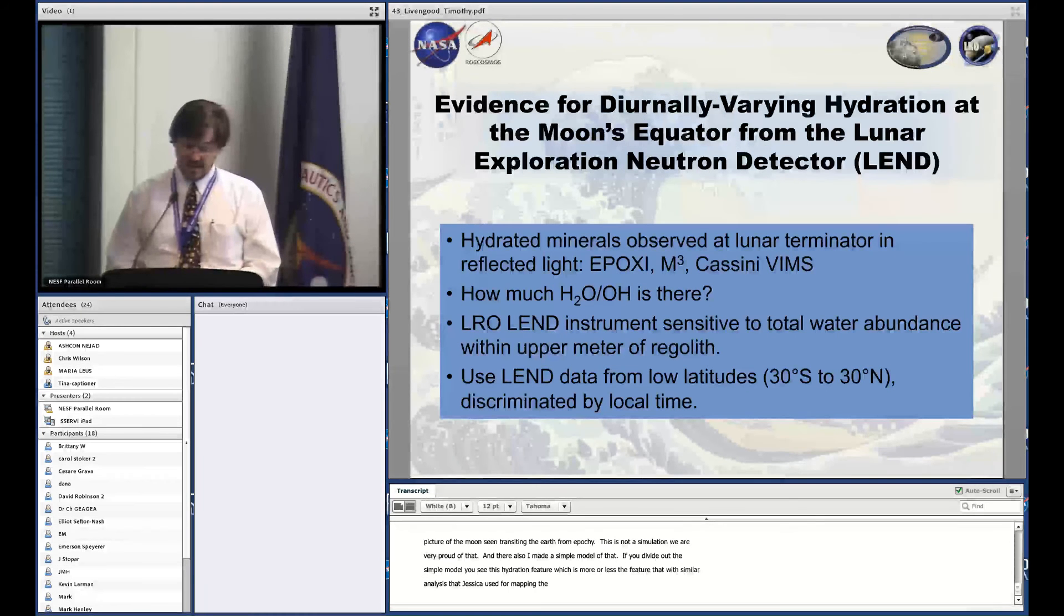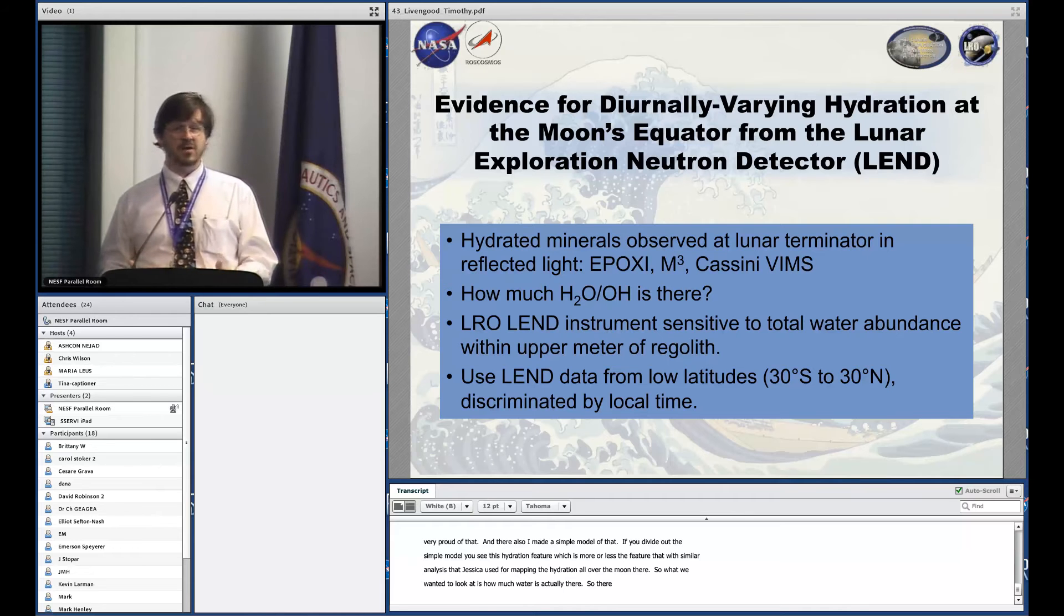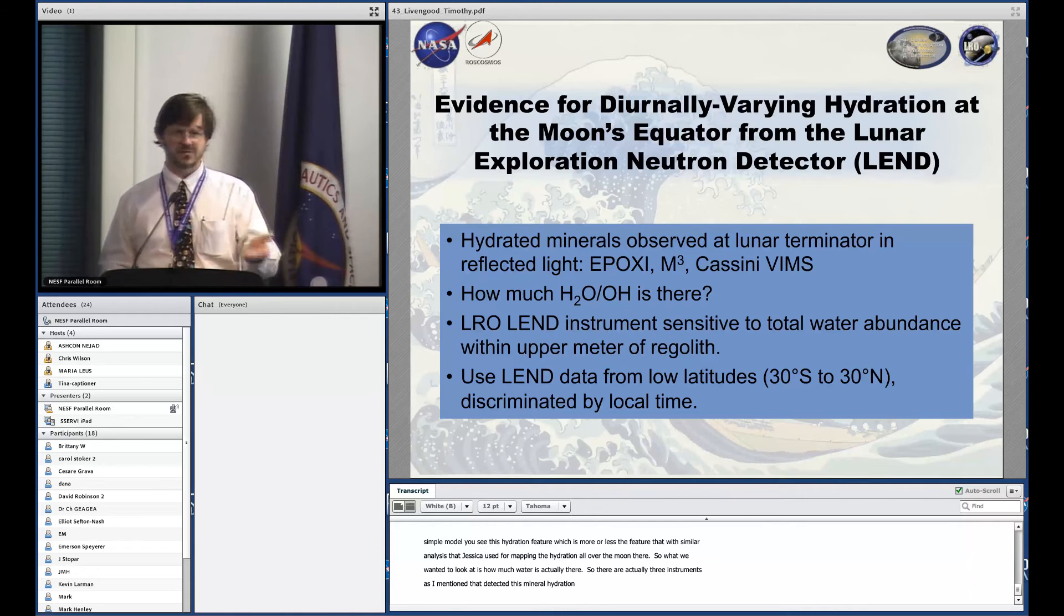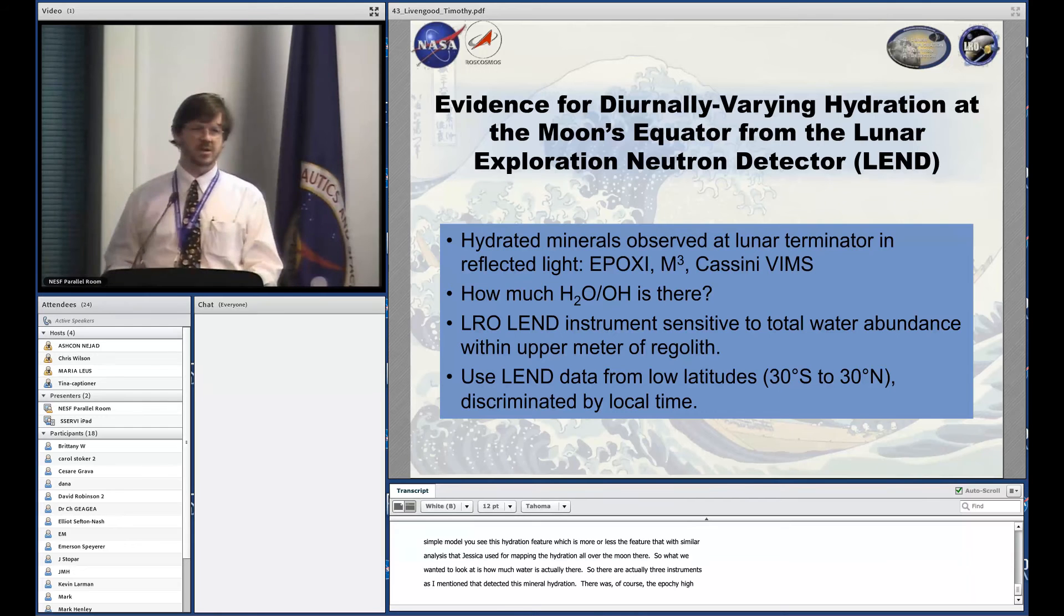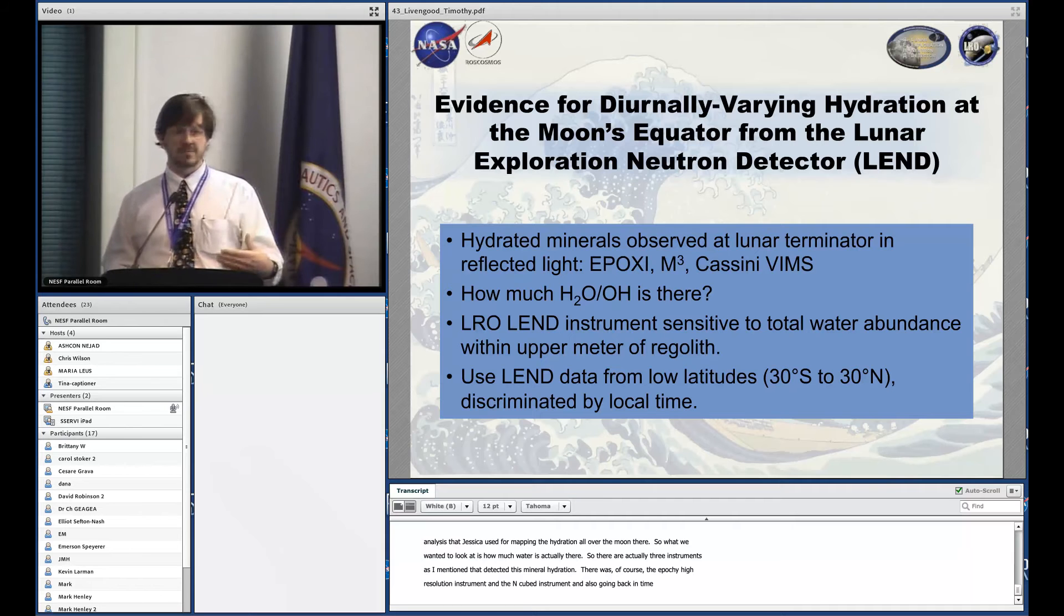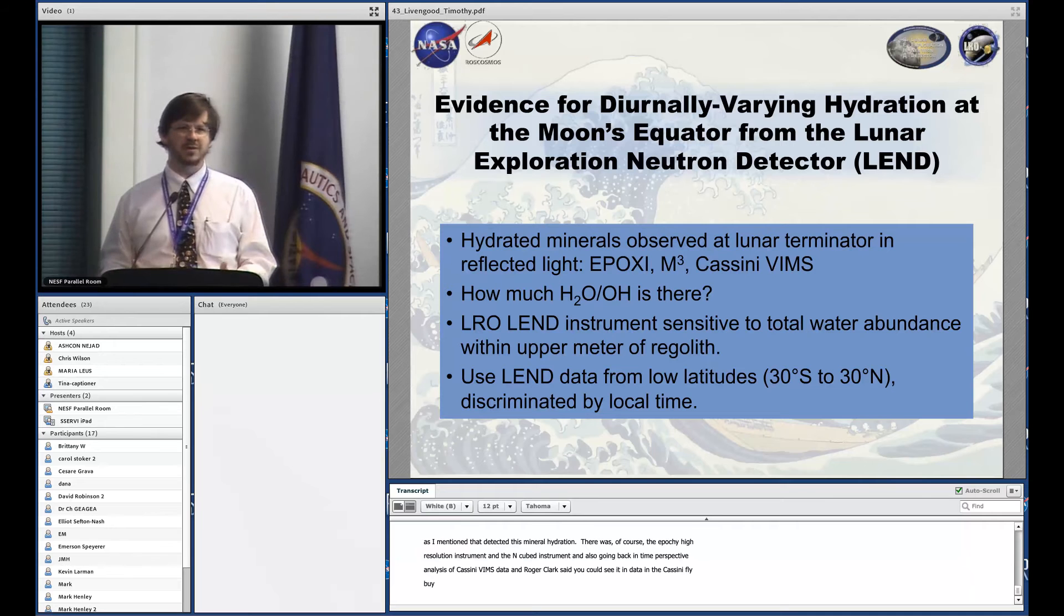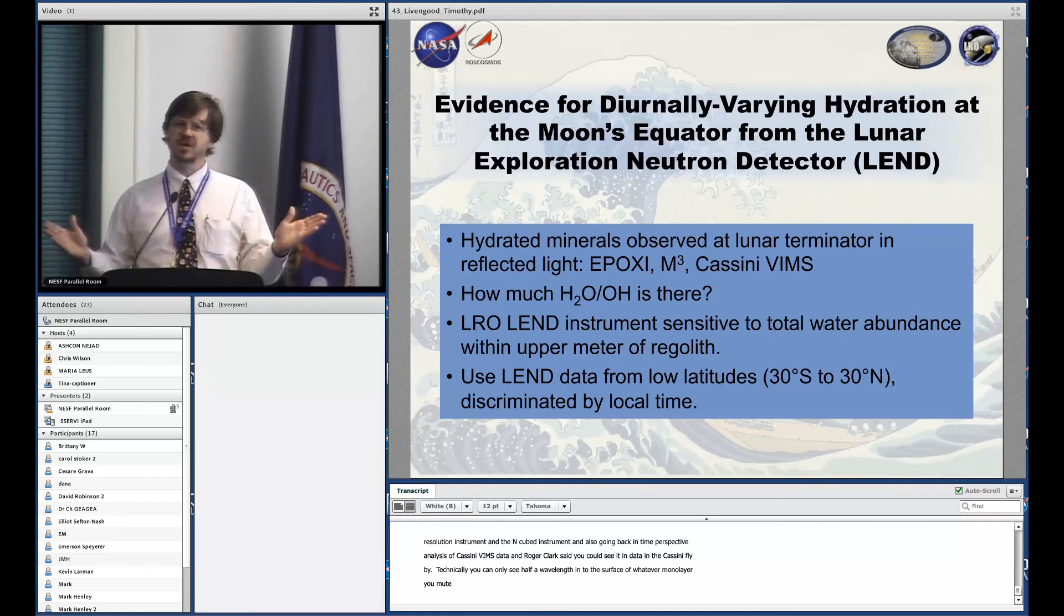What we wanted to look at is how much water is actually there. There were three instruments that detected this mineral hydration: the EPOXI high resolution infrared spectrometer, the M³ instrument on Chandrayaan-1, and Cassini VIMS data from Roger Clark. But we don't know how much water is there because technically you can only see about half a wavelength into the surface, so everything could be in the top 1.4 microns of the surface.